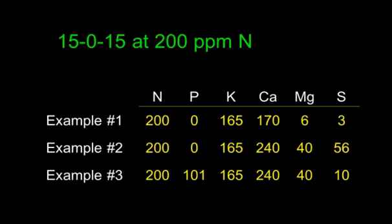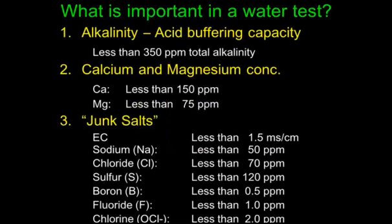In example one, the grower has to worry about phosphorus deficiency, magnesium deficiency, and maybe sulfur deficiency. In example two, the grower would only have to worry about phosphorus deficiency. In the third example, that grower probably doesn't have to worry about any nutrients because they're applying lots of phosphorus. So the same fertilizer produces three significantly different fertilizer solutions, all because of the differences in water and acid use.